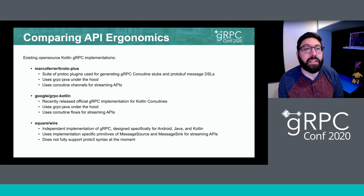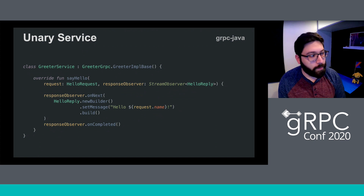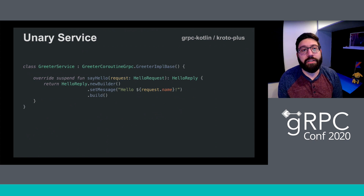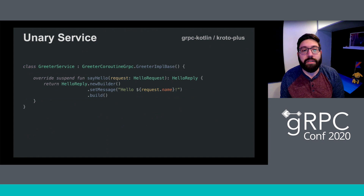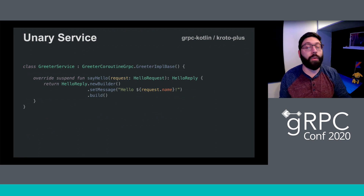We'll start by taking a look at unary APIs. This should look somewhat familiar to developers that have used gRPC Java — it's a service implementation for a unary method but with the key difference of using Kotlin syntax. If we take a look at what that looks like using coroutines, our signature no longer accepts an instance of StreamObserver. We no longer have to worry about calling onNext, onComplete, or onError. The method now has a return type defined that matches our API's response type, and it is marked with the suspend keyword, meaning its execution can be paused and resumed.